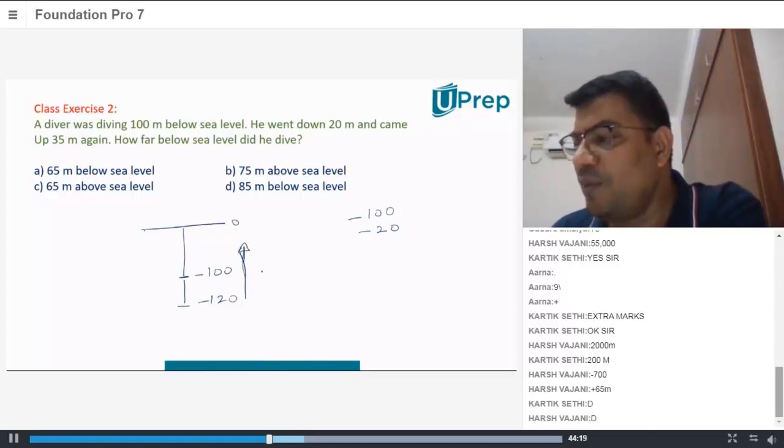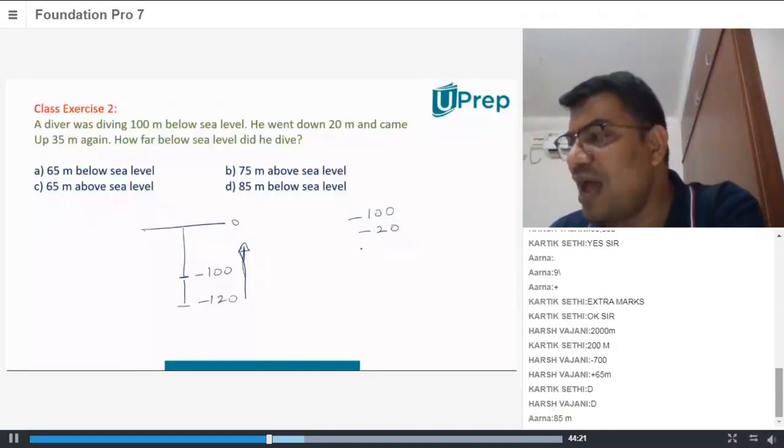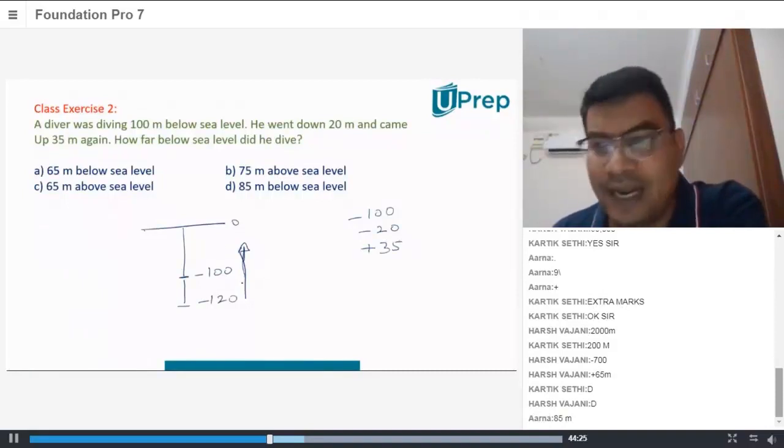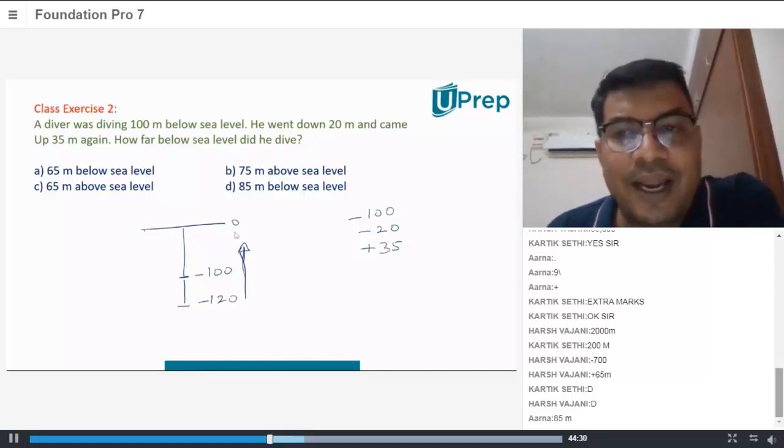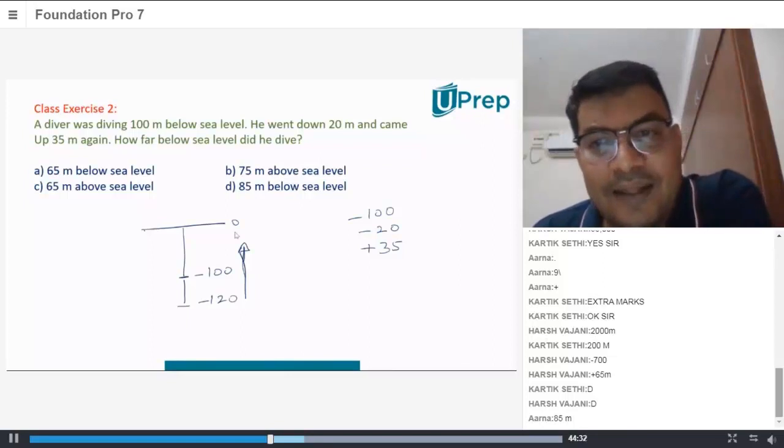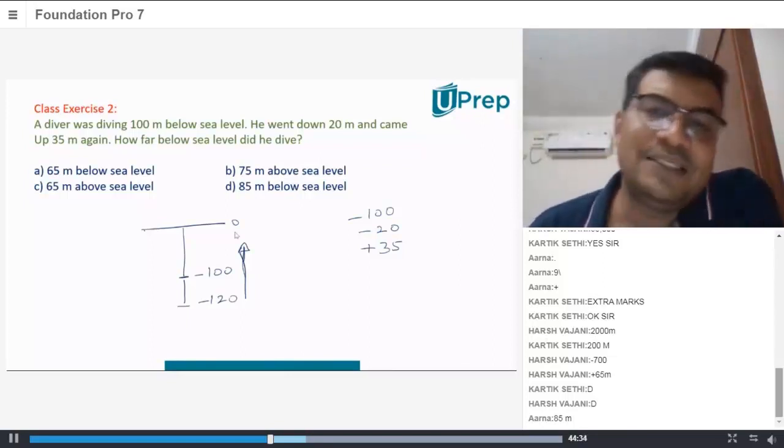What do you mean by plus 35 meters? So you have to add plus 35, so that means he has gone up right. When he's going up you will add the number. So you have minus 100 minus 20 plus 35.